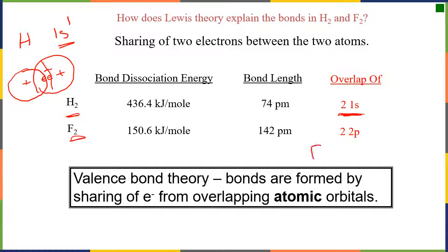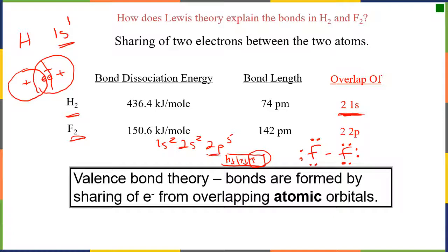If we did fluorine, we know that fluorine has a single bond with some electrons and lone pairs. Fluorine is 1s2, 2s2, 2p5. When we drew our orbitals out and put our electrons in, we have one electron sitting in a 2p orbital, and that is what is overlapping to make this bond. So valence bond theory says that bonds are formed by sharing of electrons in overlapping atomic orbitals. This seems okay so far.